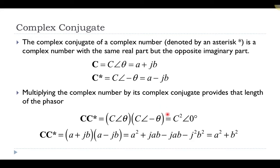Complex conjugates are useful to know about because you might want to have just a real part, and you can achieve that by multiplying the top and bottom of a fraction by a complex conjugate to get rid of the complex part in the bottom of the fraction. We'll see more of that a little bit later on.